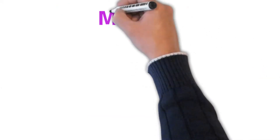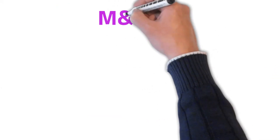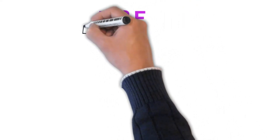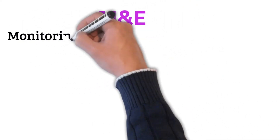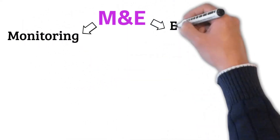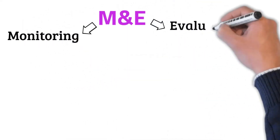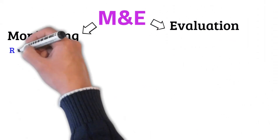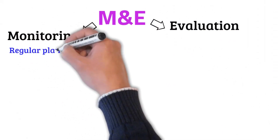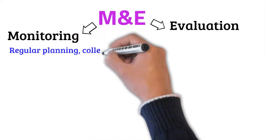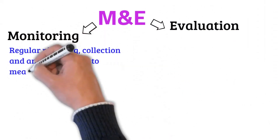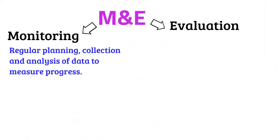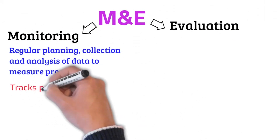Monitoring and evaluation is a combination of two different functions: monitoring and evaluation. Monitoring, on one hand, is an ongoing process of planning, collecting and analyzing data to see that the project, program or any intervention is progressing well.